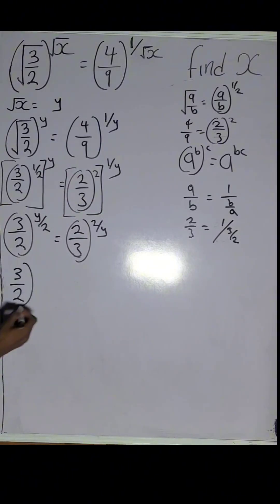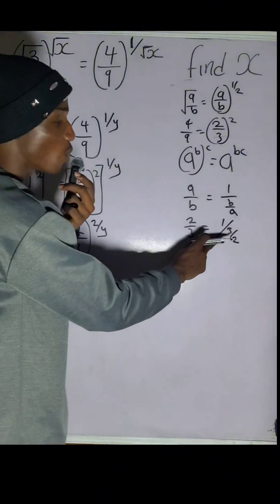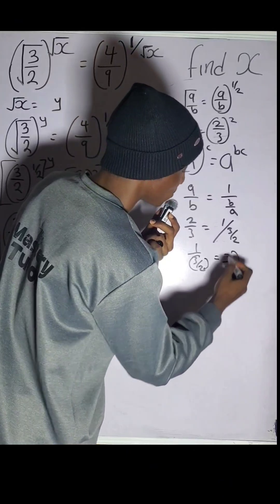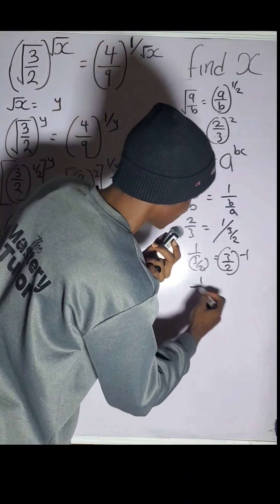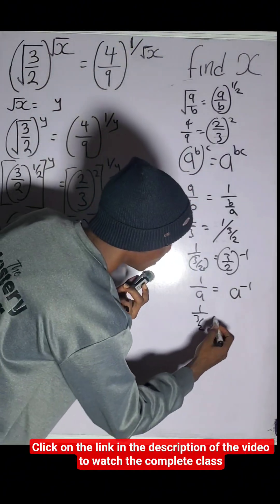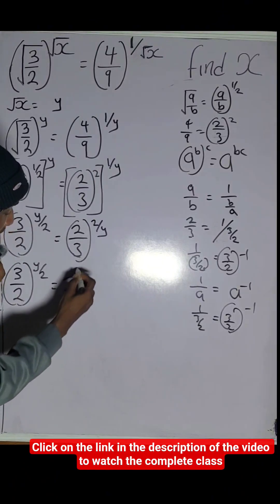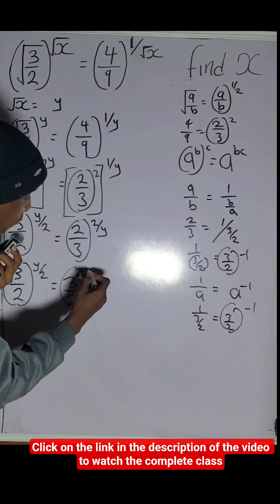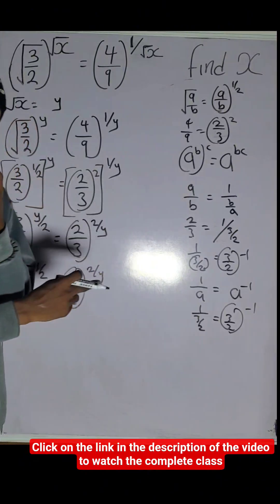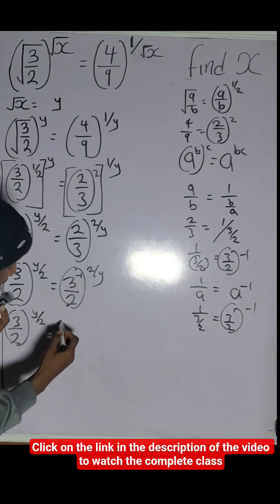So we have 3 over 2 raised to the power of y over 2, and instead of 2 over 3 we write 1 over 3 over 2. Since the inverse of a is a raised to the power of minus 1, the inverse of 3 over 2 is 3 over 2 raised to the power of negative 1. So we get 3 over 2 to the power of negative 1, raised to the power of 2 over y. Applying the power-of-power law gives 3 over 2 raised to the power of y over 2, equal to 3 over 2 raised to the power of negative 2 over y.